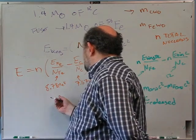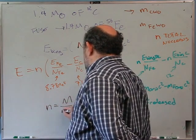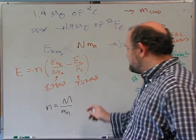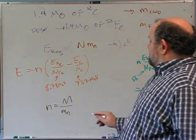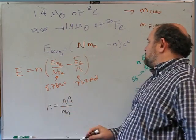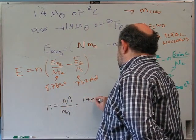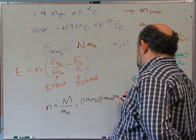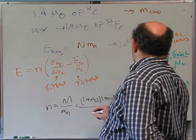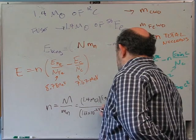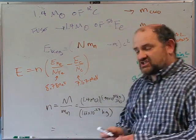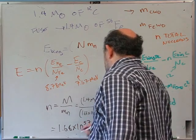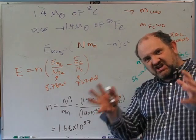N = 1.4 solar masses × 1.99×10³⁰ kg/solar mass ÷ 1.66×10⁻²⁷ kg/nucleon = 1.68×10⁵⁷ nucleons. The binding energy correction is only ~1%, so this is good to 2 sig figs. That gives us everything to calculate the released energy: E = N × (BE_Fe − BE_C) per nucleon = 1.68×10⁵⁷ × (8.78 − 7.67) MeV.